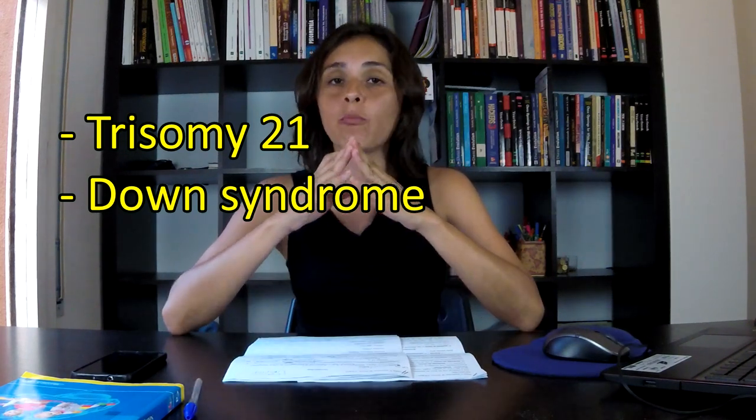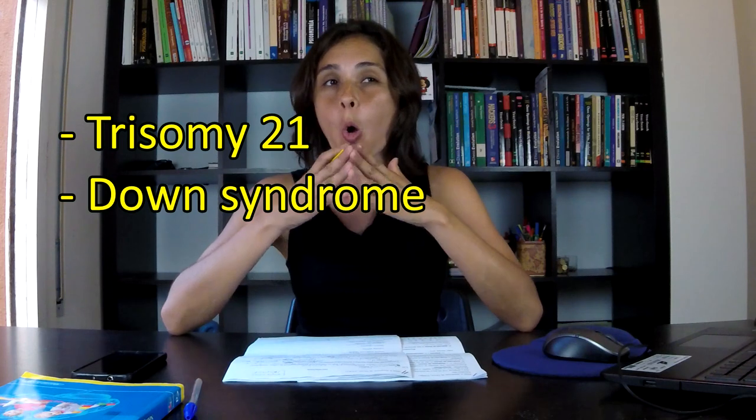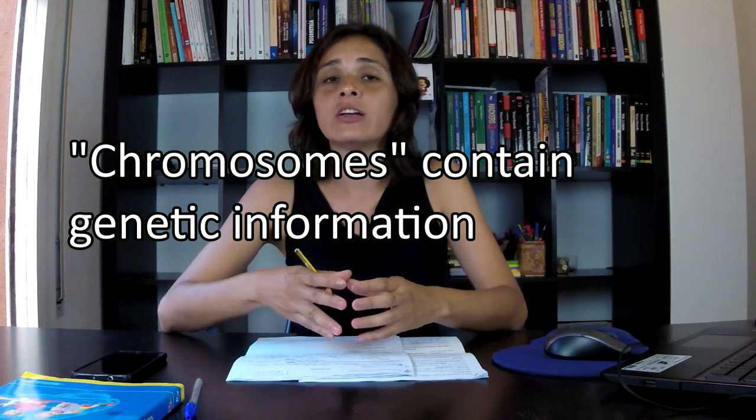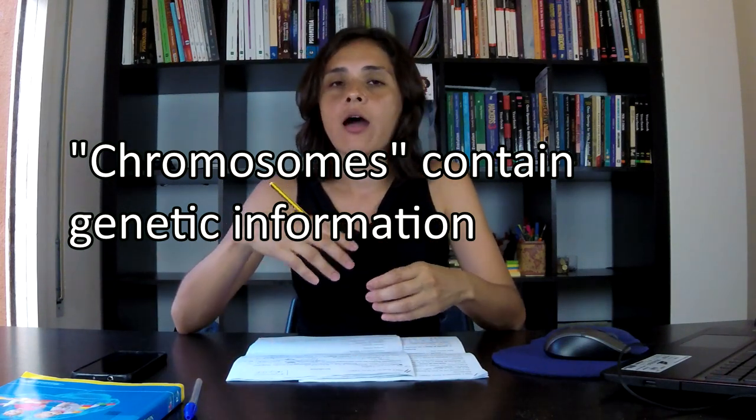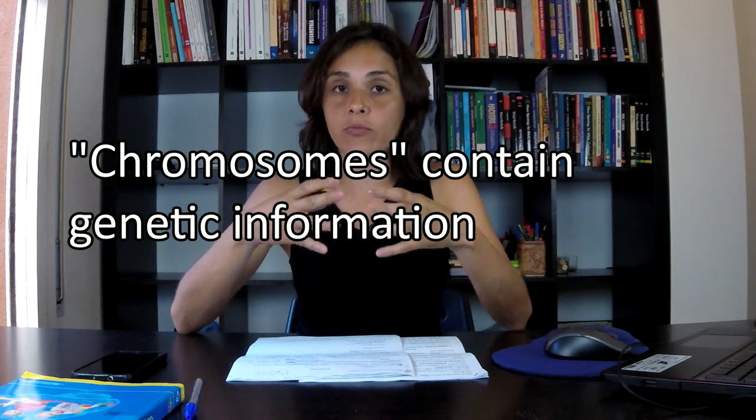Down syndrome is one of the most frequent alterations of the chromosome of the human species. Chromosomes are the structures that are located inside the cell and contain genetic information.